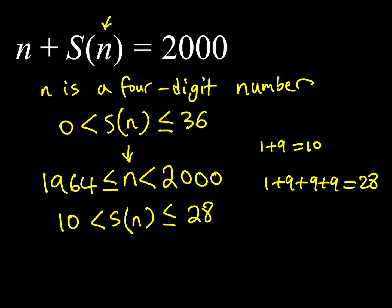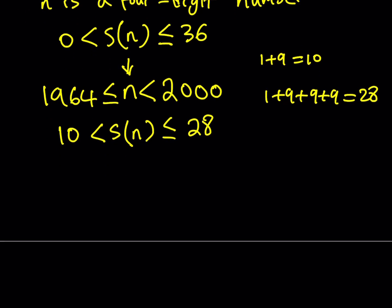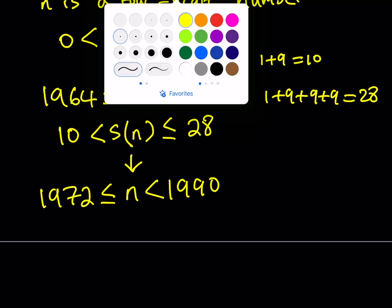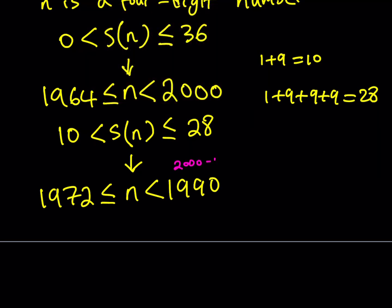Great, now, this inequality actually gives us something nicer than the first one. Since S of n is going to be between those two numbers, and if you consider the fact that their sum is going to be 2000, you can safely say that n is going to be between 1972 and 1990. So in this case, we're basically saying that this is 2000 minus 10, and this is 2000 minus 28.